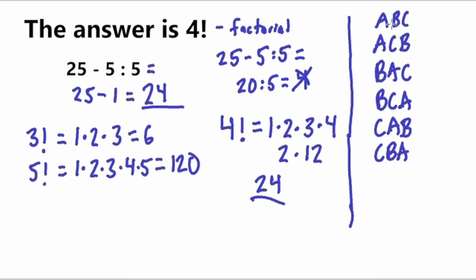So where do factorials come into play? Well, since we have these three objects, we see that with three objects we can have 1, 2, 3, 4, 5, 6 different combinations.